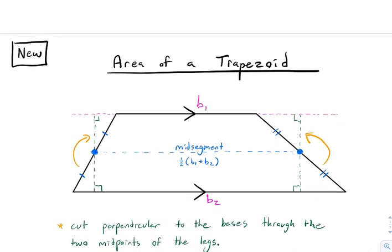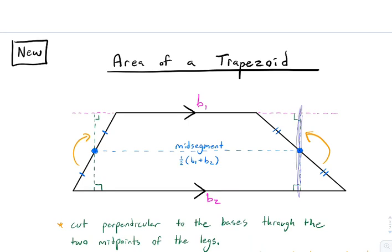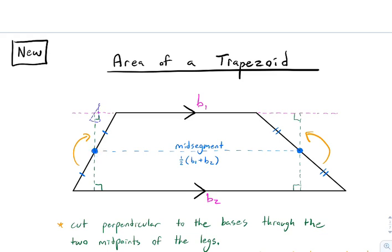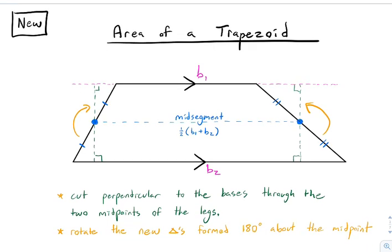Now let's draw a line perpendicular to the two bases — the sides of the trapezoid that are parallel. I drew this down through that midpoint on both sides, making sure I had a right angle on top and bottom. In orange, I can rotate the new triangles and swing them up into the open spot. These lengths are the same since the midpoint cuts into two congruent segments. We also have a right angle in both and vertical angles here, so by AAS, those two triangular regions are congruent.